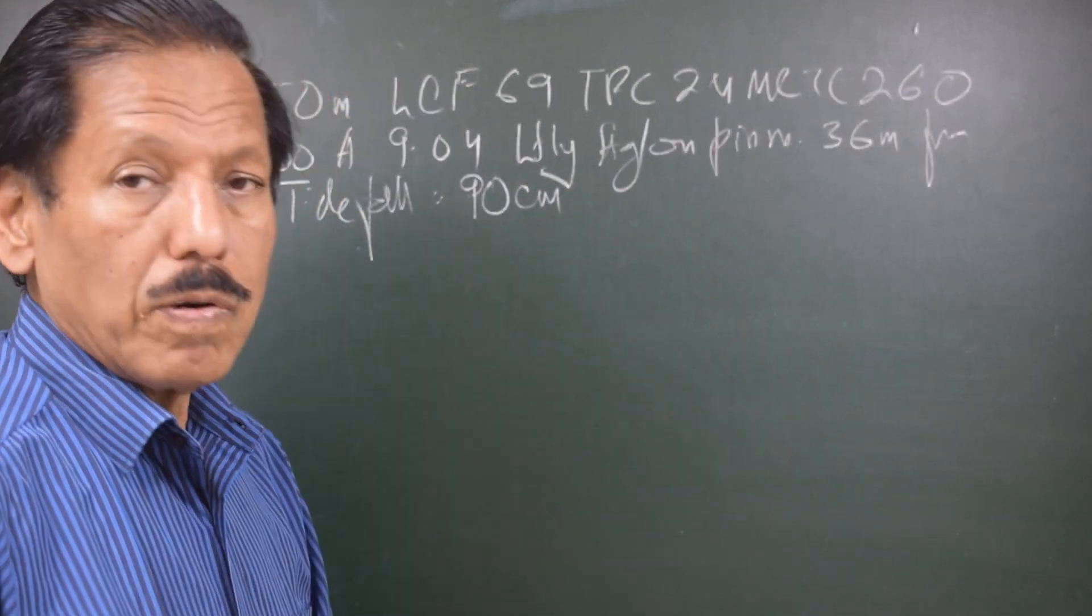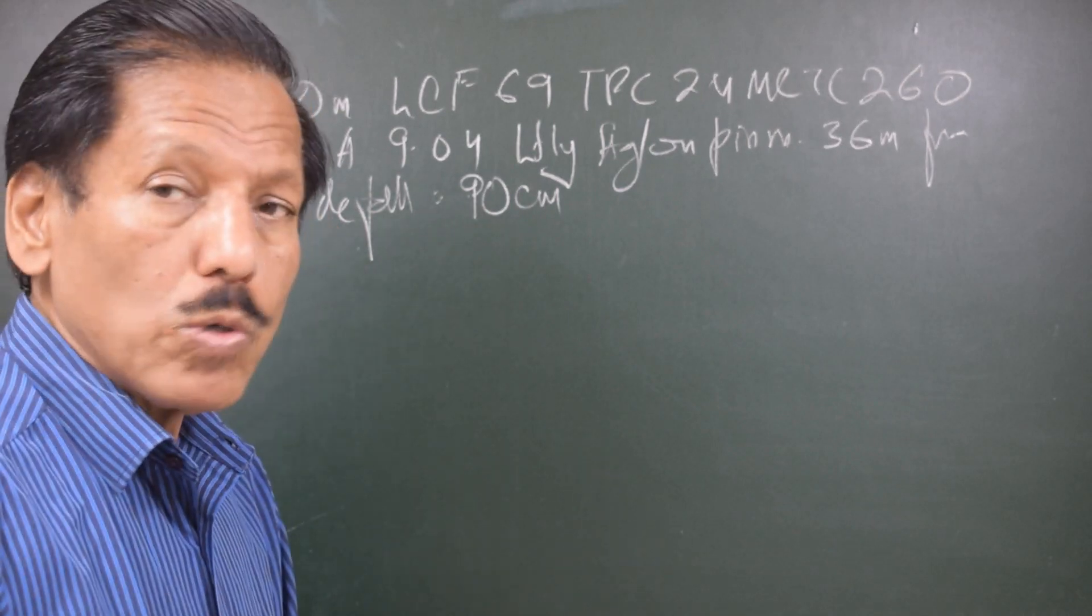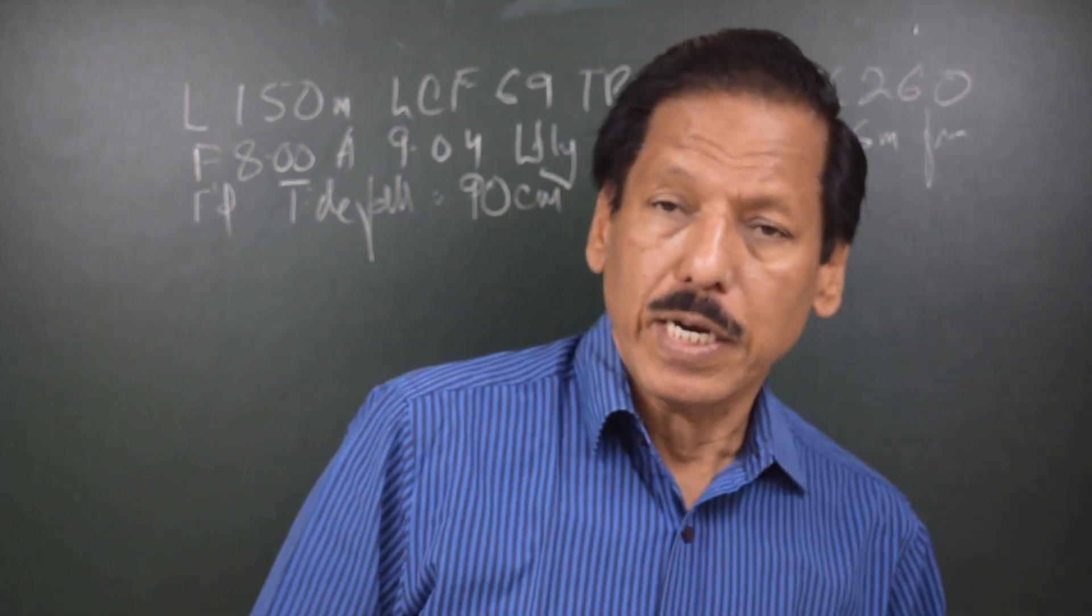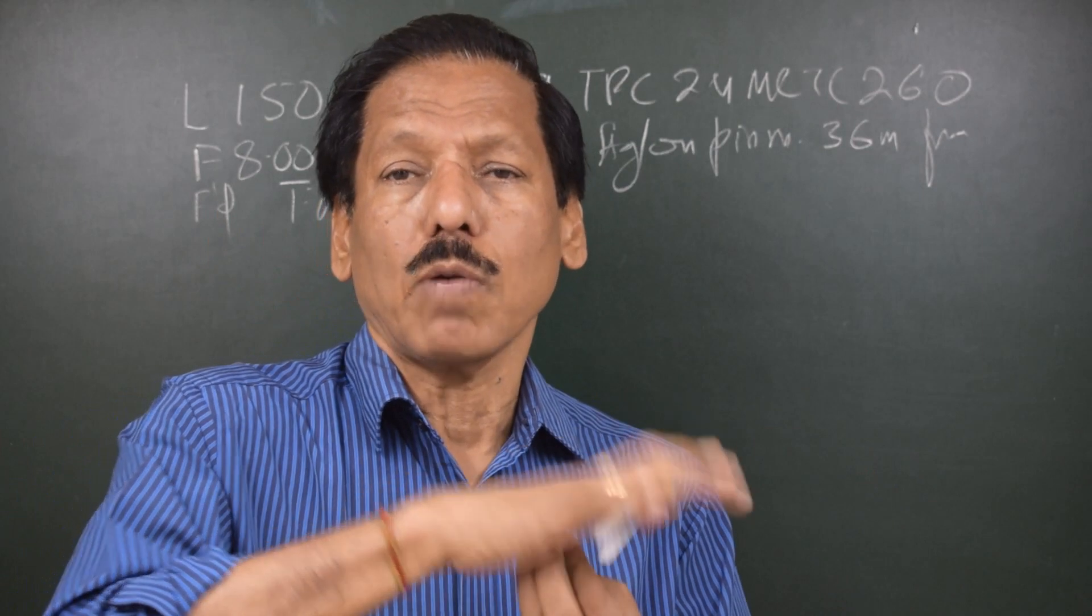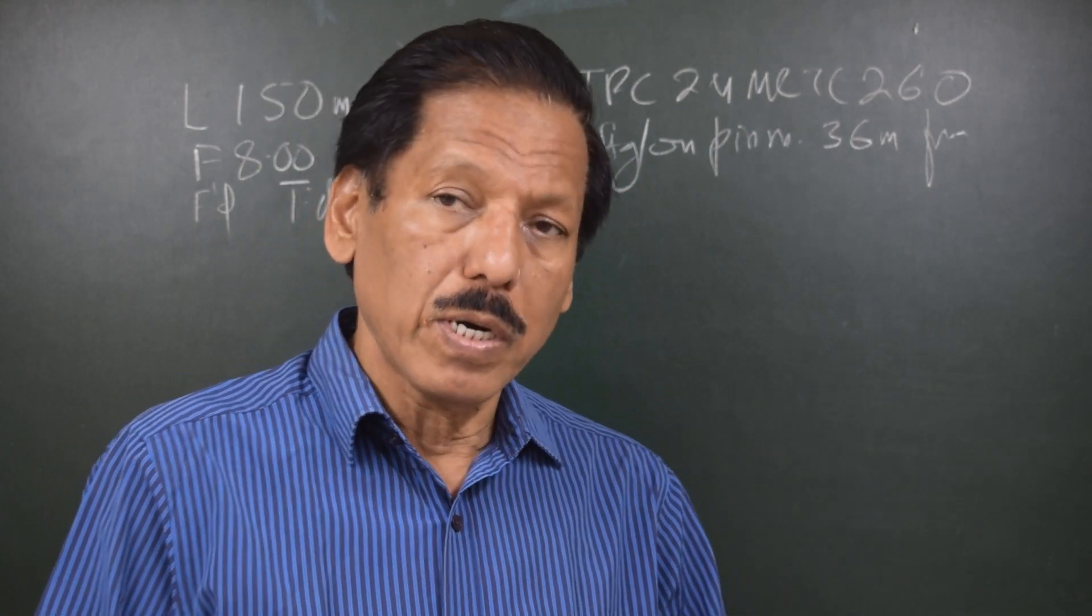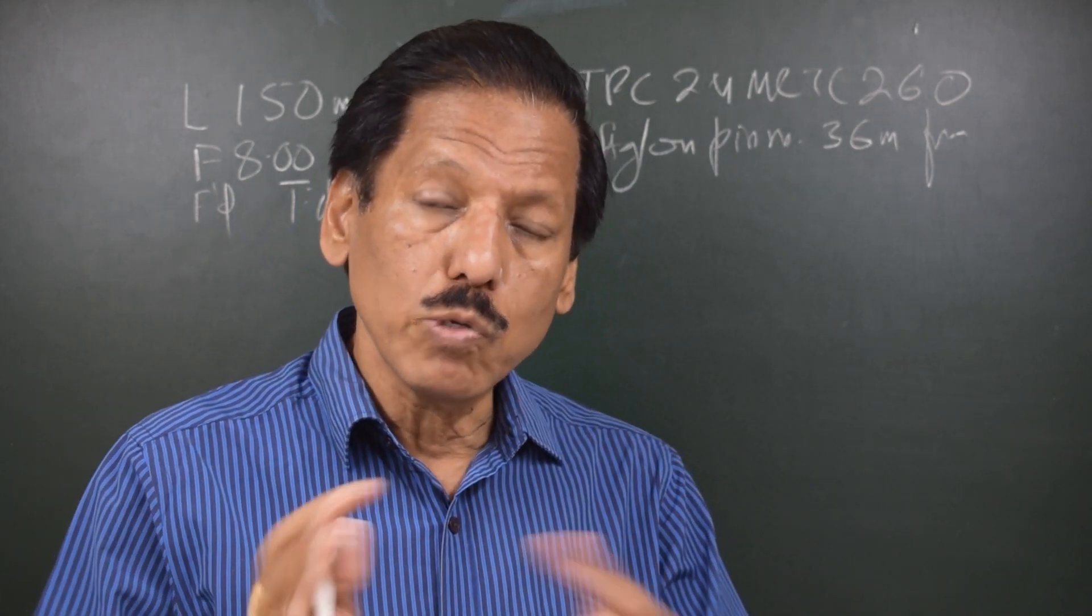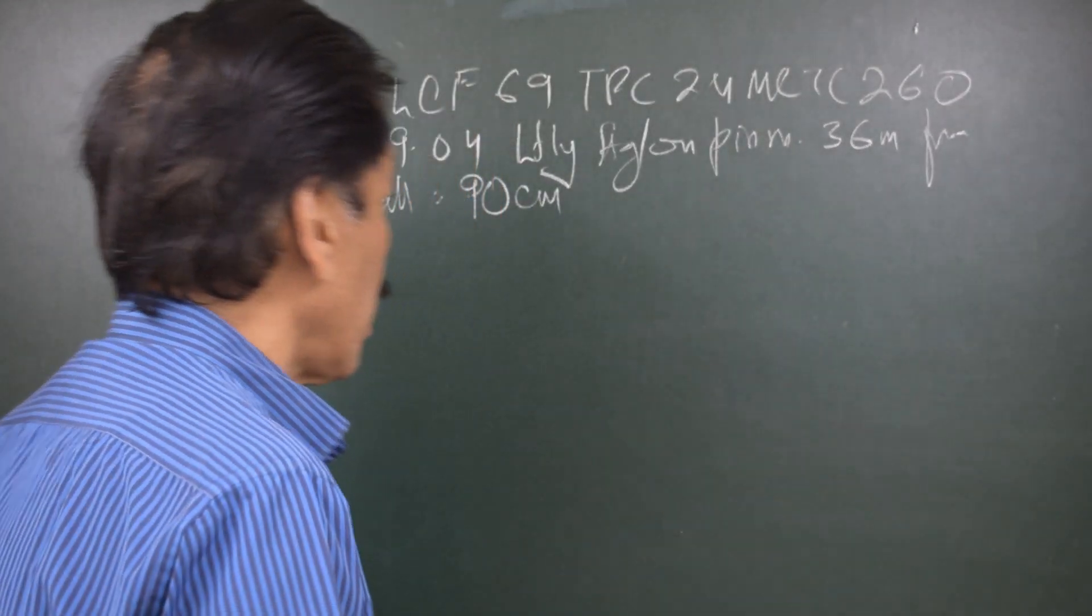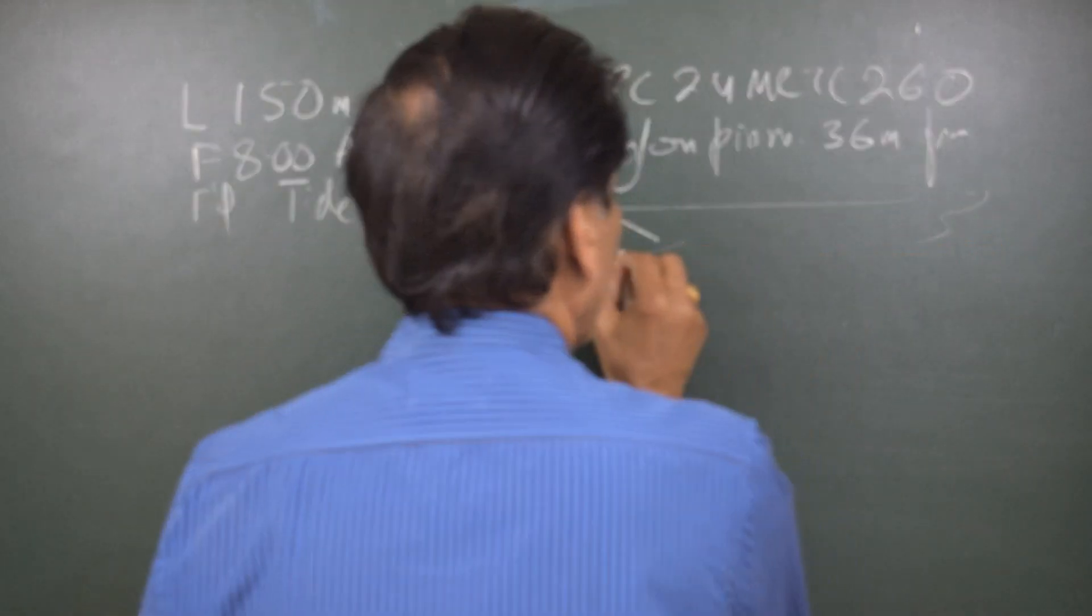If the tidal fall is going to be 90 centimeters, what we want to find out is what kind of thrust will be generated on the ship. Because if the tide falls, what happens is the vessel is stopped at the pinnacle, the buoyancy provided by the water would reduce, and that reduced buoyancy would get transformed into the upthrust from the pinnacle.